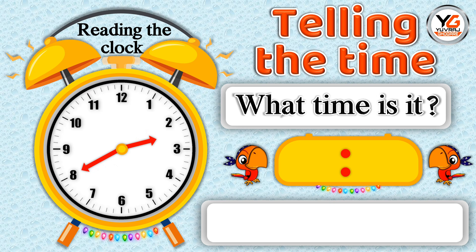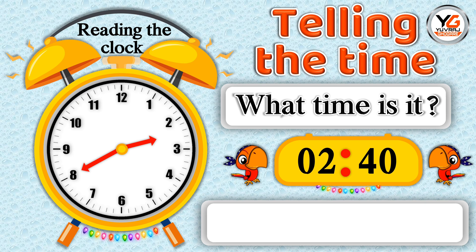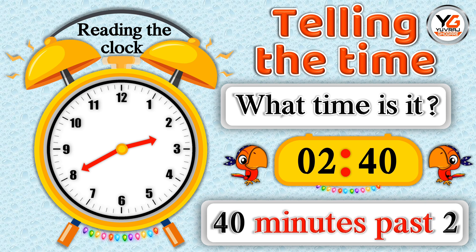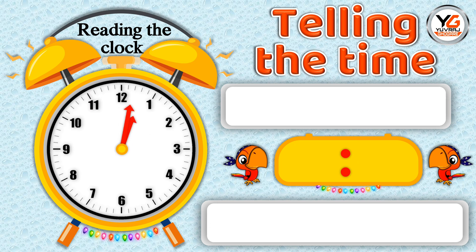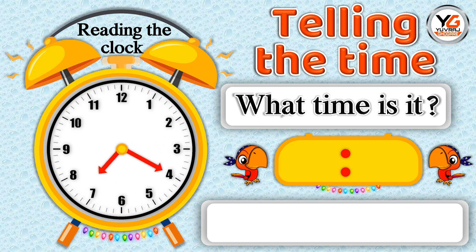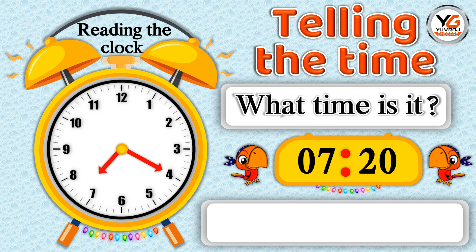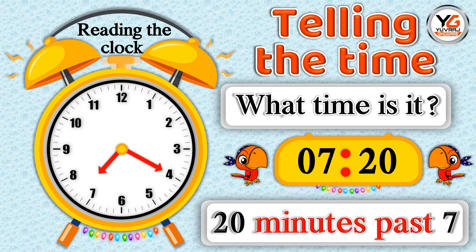What time is it? 2.40 — means 40 minutes past 2. What time is it? 7.20 — means 20 minutes past 7.